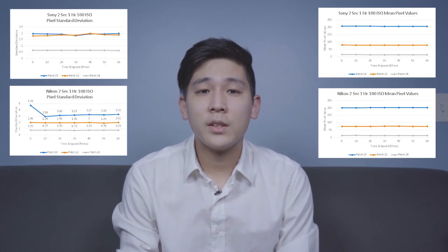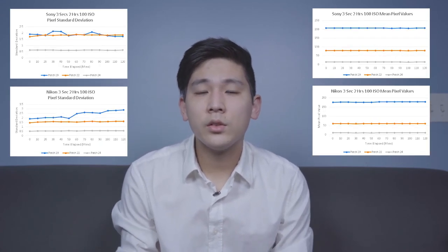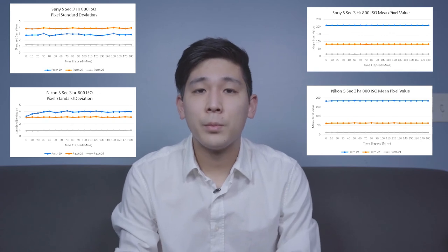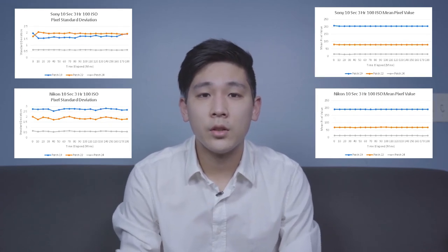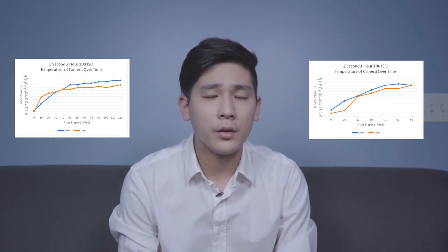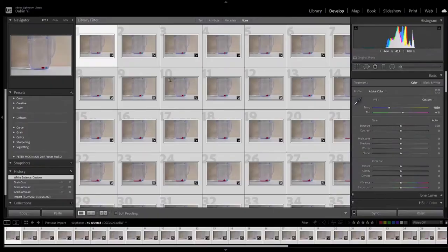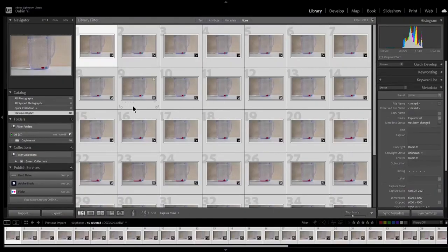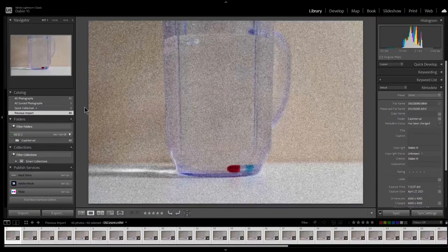Looking at the results, the condensed version is that I severely underestimated these cameras. After going through all the numbers and putting them in graphs, you can see there were little to no changes in any of the values, whether the average or standard deviation. However, there was an increase in temperature for both cameras as they shot for longer periods. So at the end of it all, these cameras are really impressive. Looking back, my photos were probably not ruined because of thermal noise, but probably for some other reason. As long as you keep in mind the work the camera has to do, there shouldn't be any issues with thermal noise. Thanks for watching.